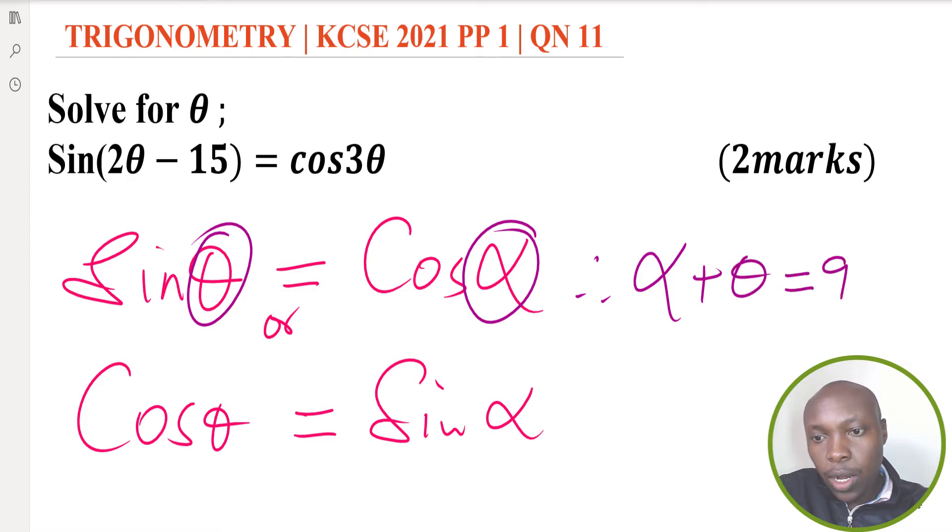The other is also the same here. When you add these two angles, when you add α plus θ, that should give you 90. That is a property of complementary angles in trigonometry.